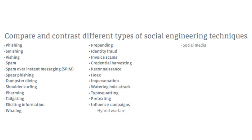Then we have spam, which is unwanted messages, and spim, which is the same thing but over instant messaging. What makes these different from phishing is that these attacks don't look legitimate. Attackers send out countless messages hoping someone will fall victim, such as emails saying you won the lottery or that you have a virus and should click for free antivirus software.